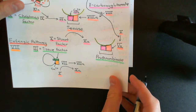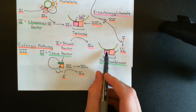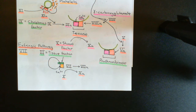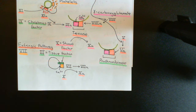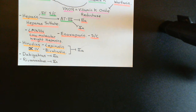Factor 10A is the one which combines into a complex with factor 5A and calcium on the surface of activated platelets to form the pro-thrombinase. This has to occur in both the intrinsic and extrinsic coagulation pathways. This pro-thrombinase complex converts pro-thrombin factor 2, which binds to the surface of activated platelets by calcium, into thrombin factor 2A, which then starts converting fibrinogen into fibrin monomers and forming the fibrin mesh.